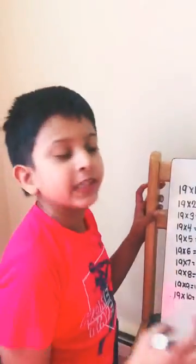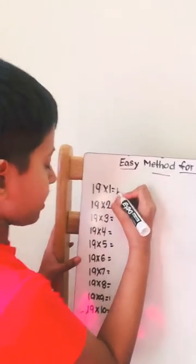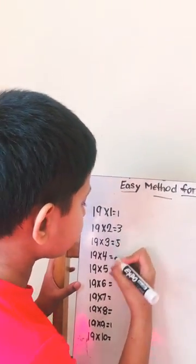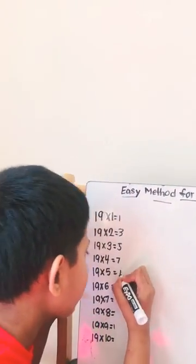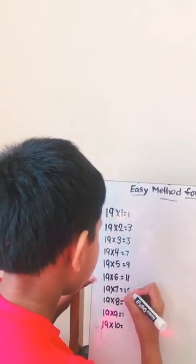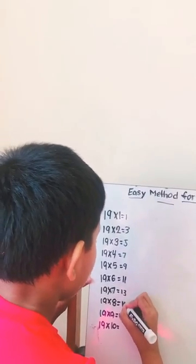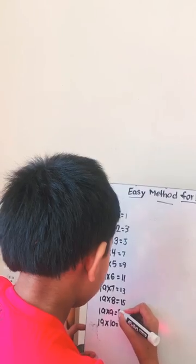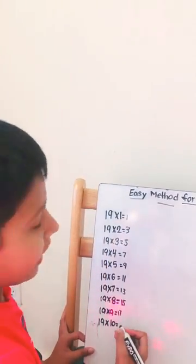First, you're supposed to skip all the even numbers. So one, two skipped, three, four skip, five, six skip, seven, eight skip, nine, ten skip, eleven, twelve skip, thirteen, fourteen skip, fifteen, sixteen skipped, seventeen, eighteen skip, and nineteen. There.